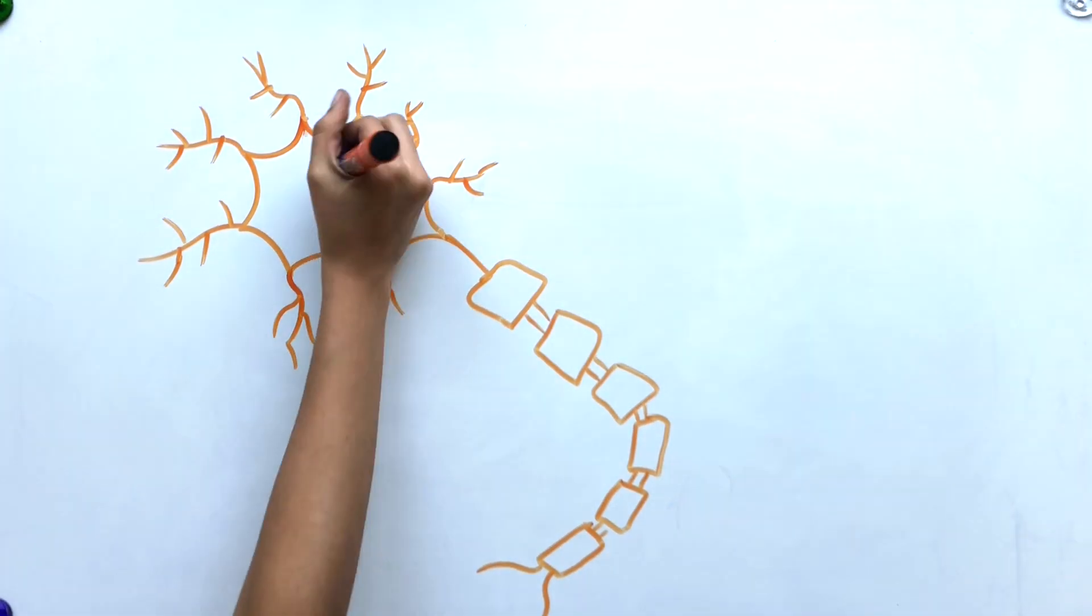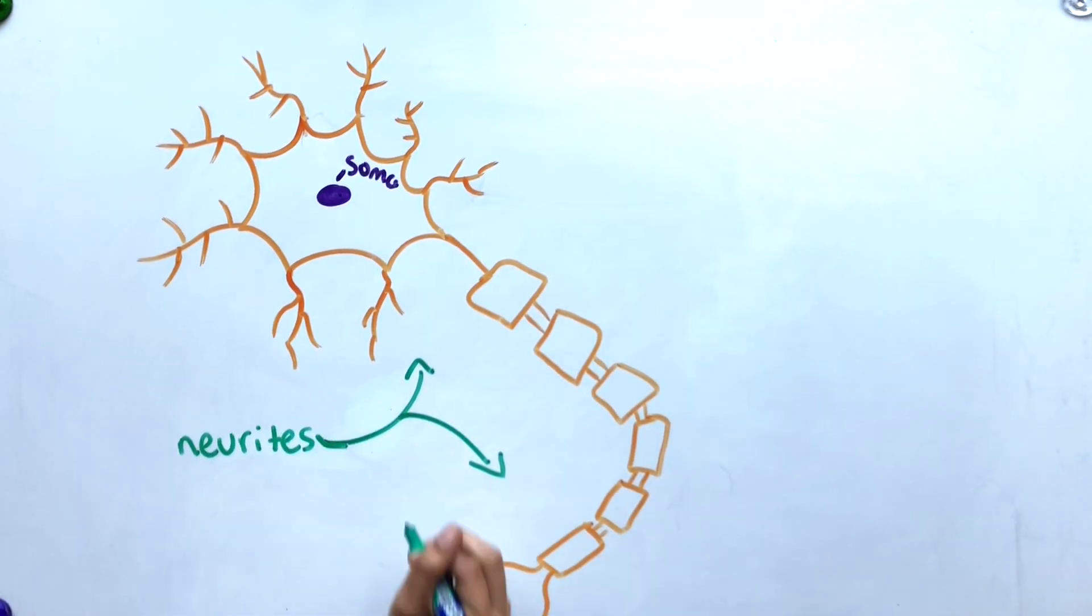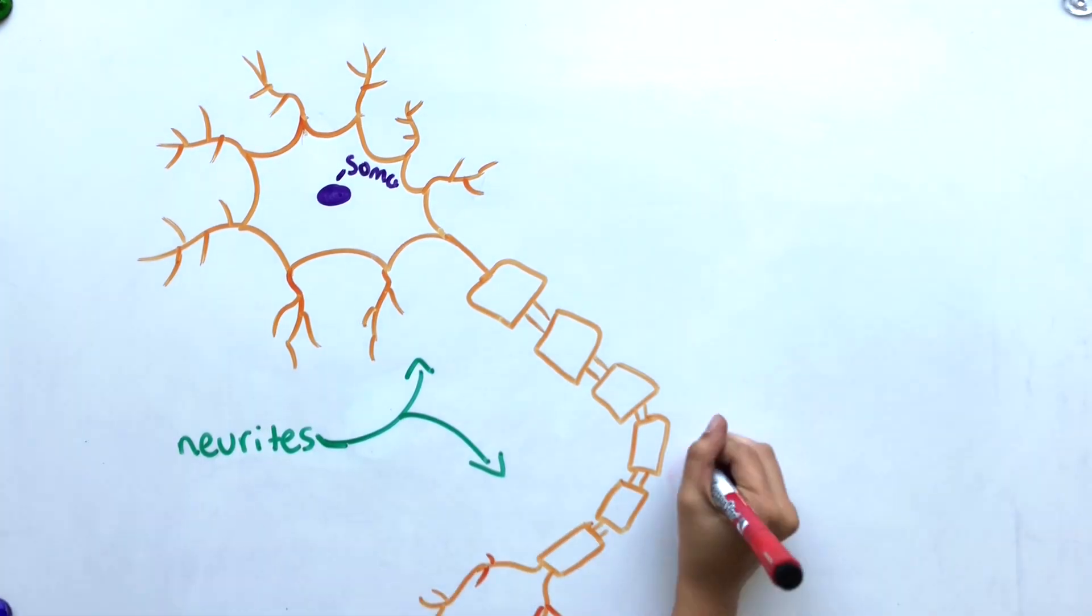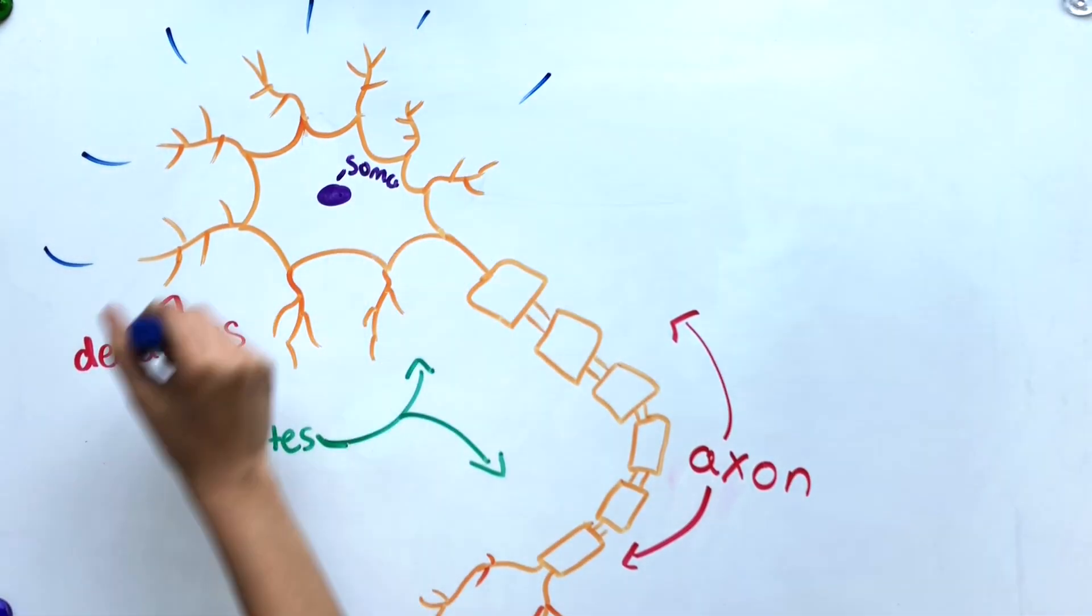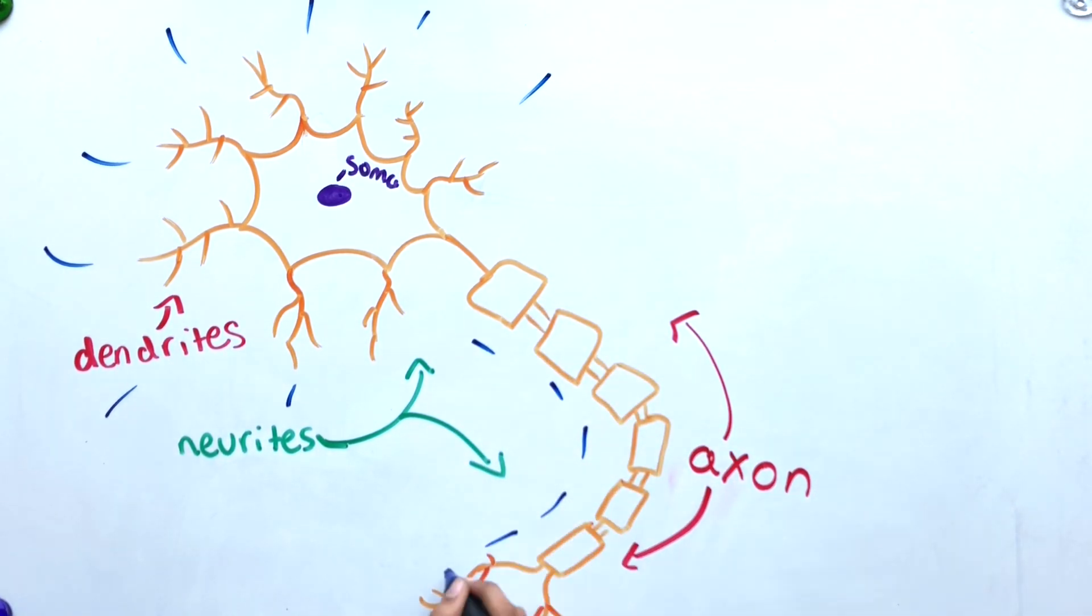We call the central region the soma, and the thin tubes that radiate from the soma are called neurites, which can be either axons or dendrites. Somas usually have one axon, which carry the output of neurons. On the other hand, numerous dendrites extend from the soma and receive the inputs of neurons.